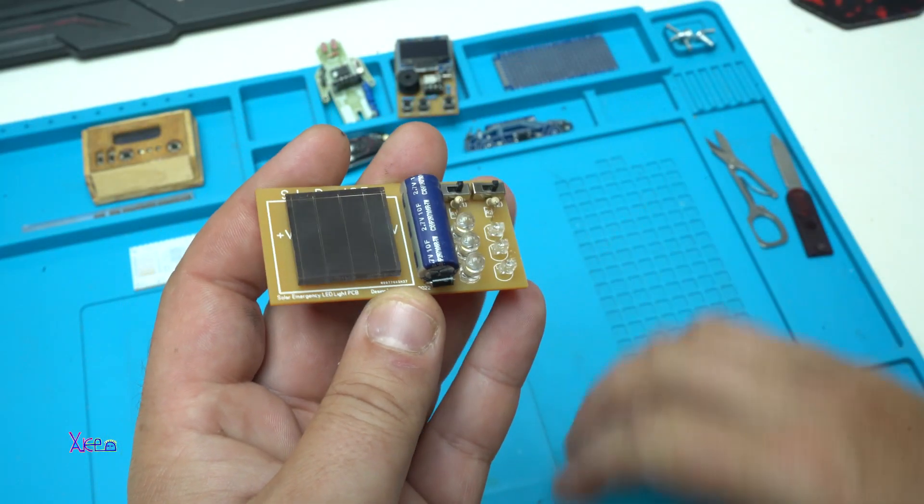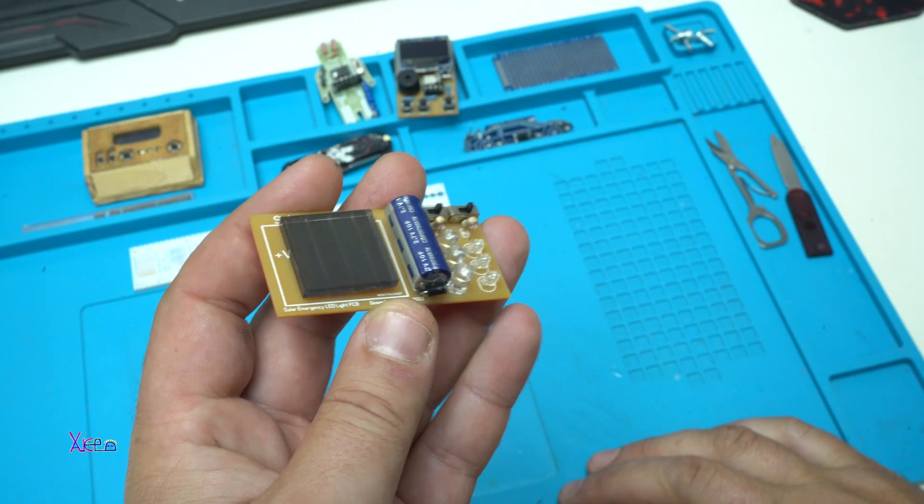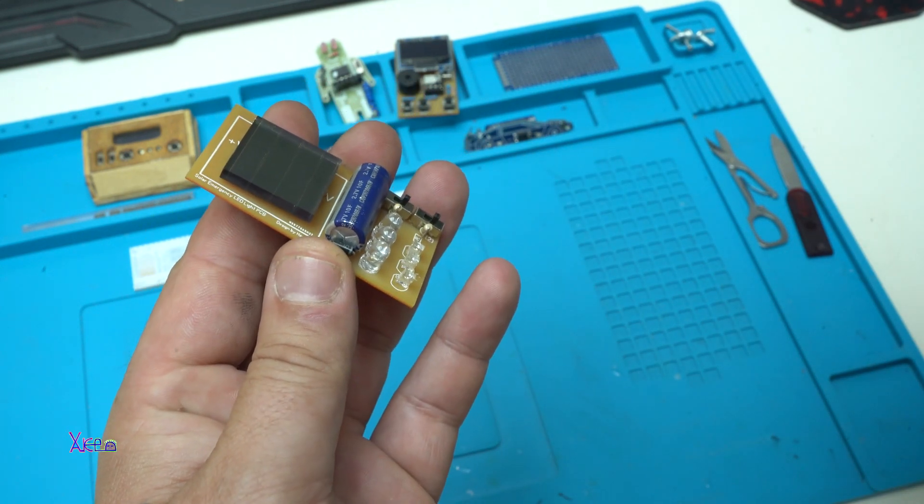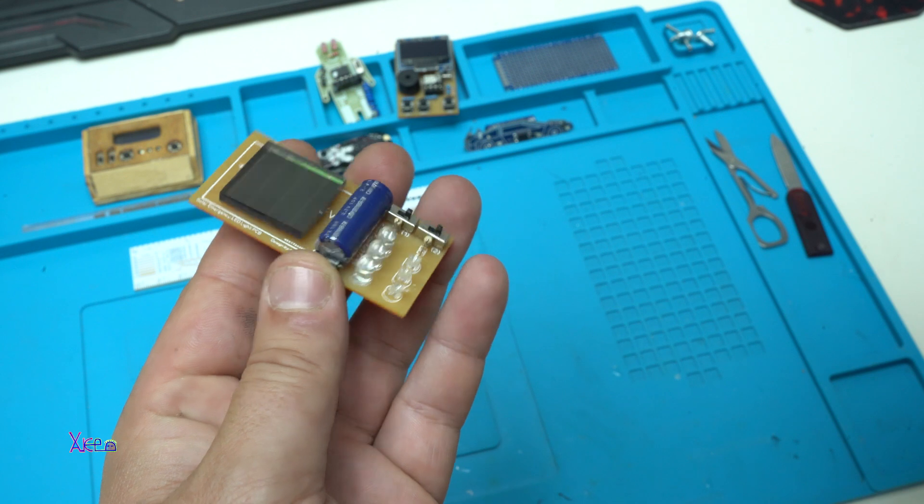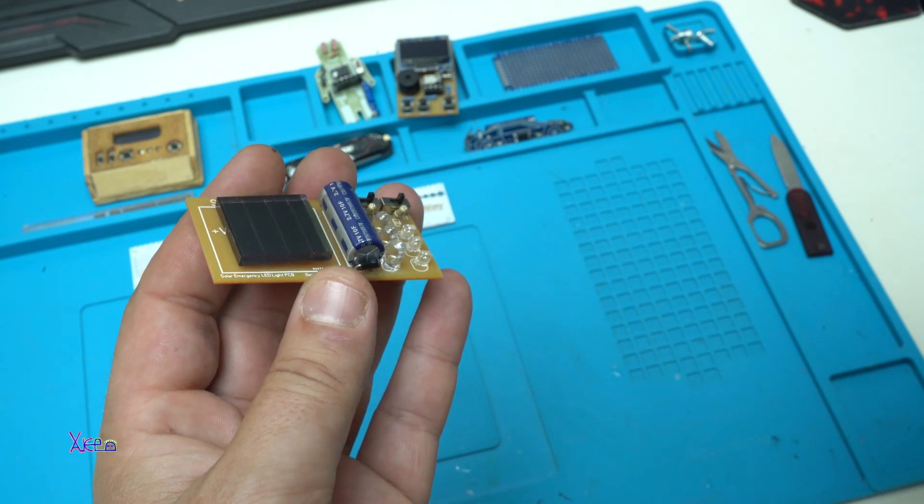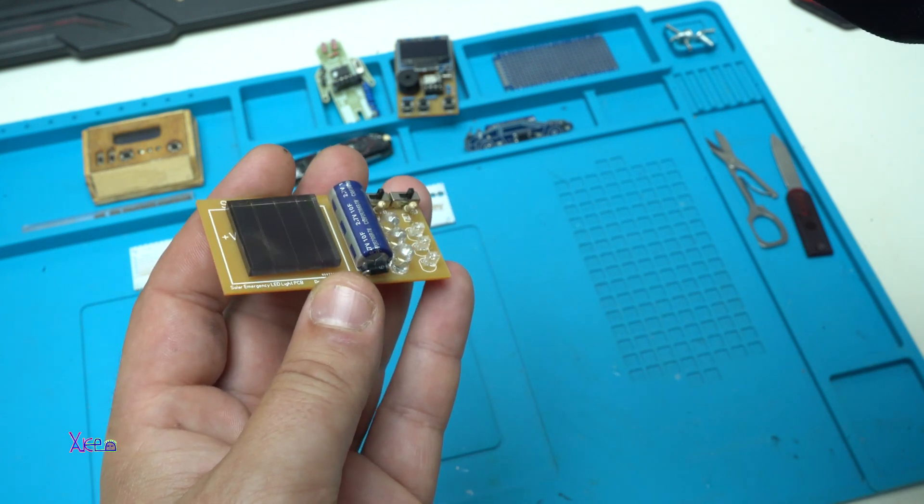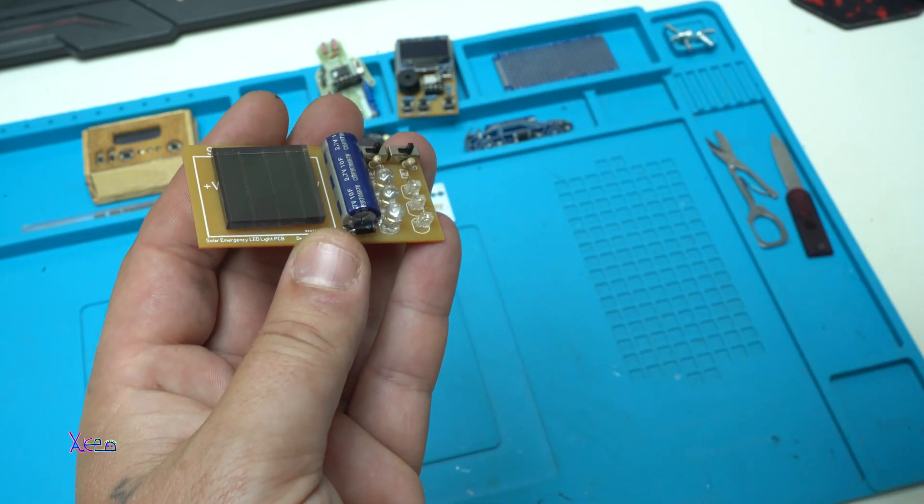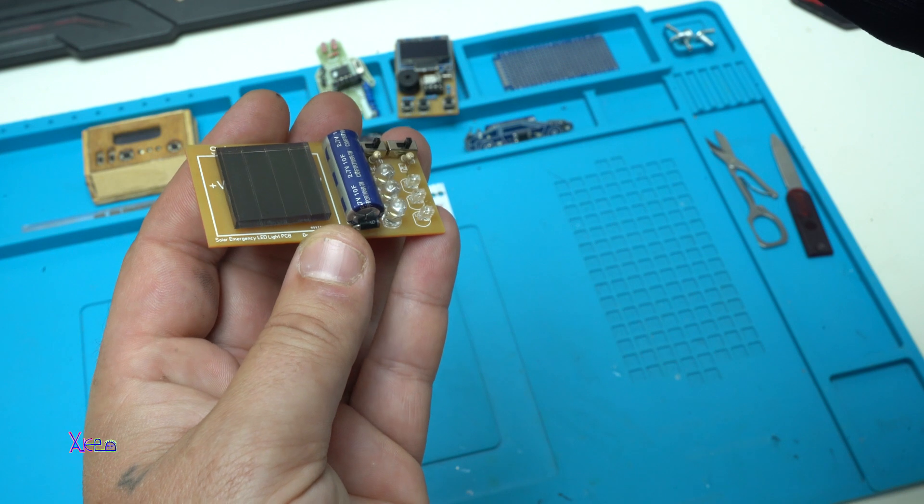And why this device is batteryless, because I'm using a supercapacitor instead of lipo battery or nickel cadmium or nickel metal hydride. The supercapacitor can last many years and that's why this is emergency batteryless solar LED light with PCB board that's looking good.